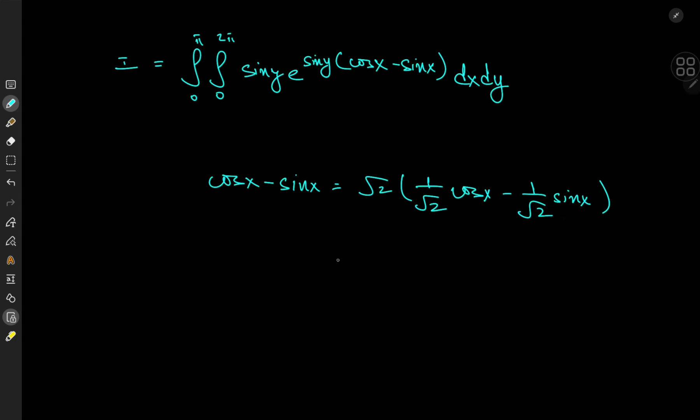The reason for that is that cosine of pi over 4 is equal to the sine of pi over 4, and that equals 1 over root 2.